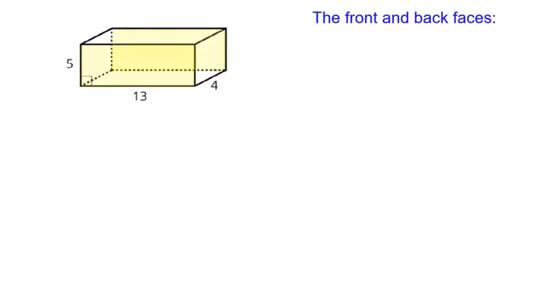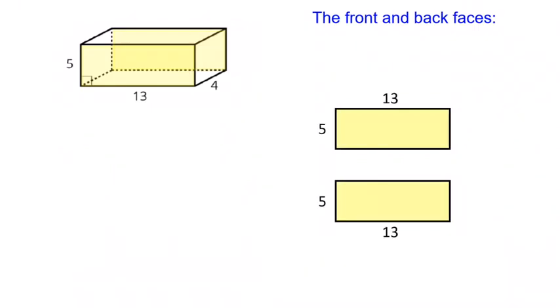So one method for doing surface area, especially for prisms, is to use the pairings of their faces. For example, here, the front and the back are identical rectangles, and this only works for rectangular prisms, but it's a good method. Those two rectangles are both 5 by 13 rectangles. And one method you could do is build a net, and so those would be the front and the back faces.